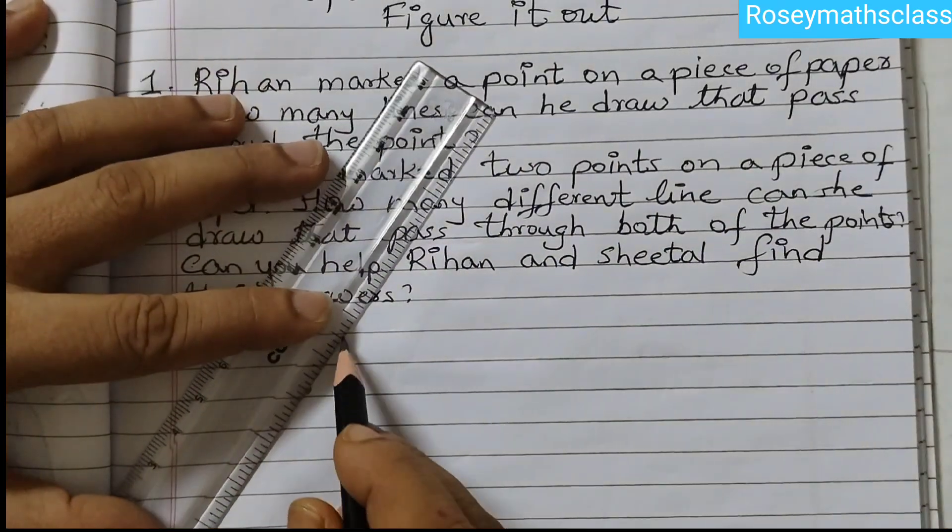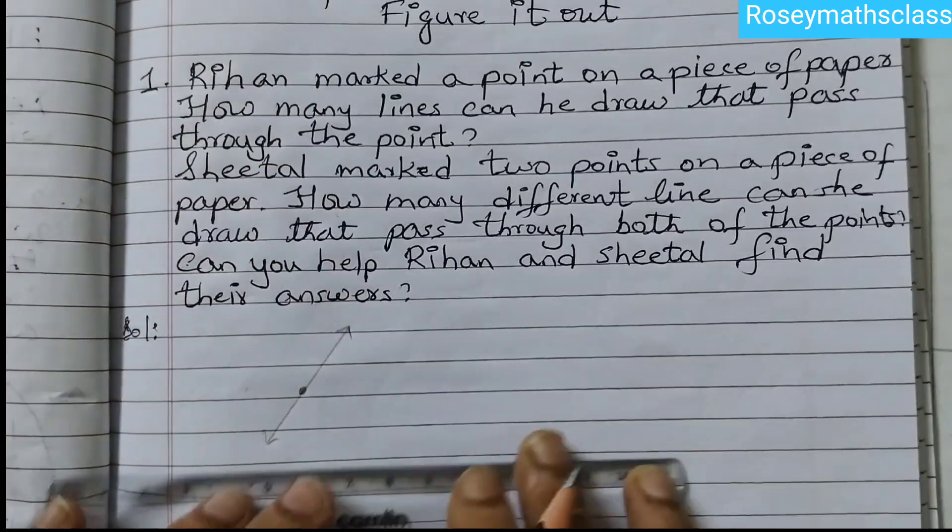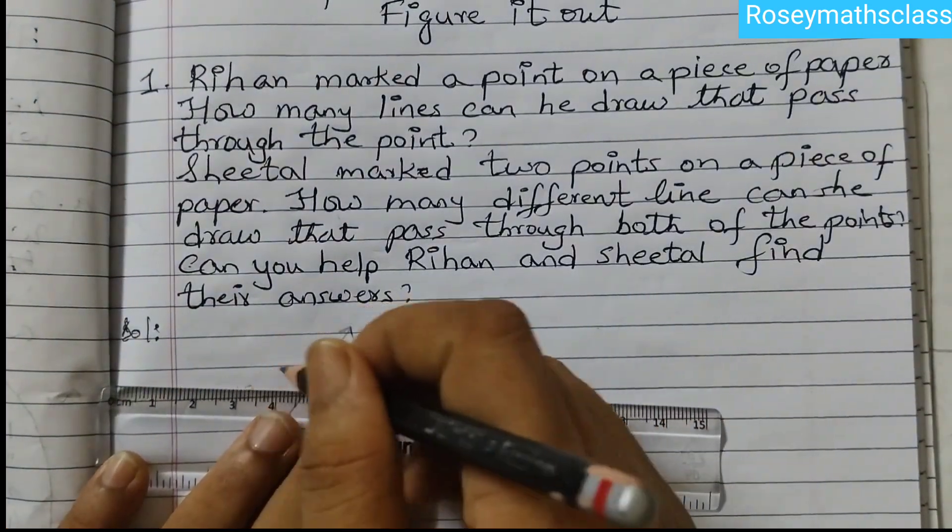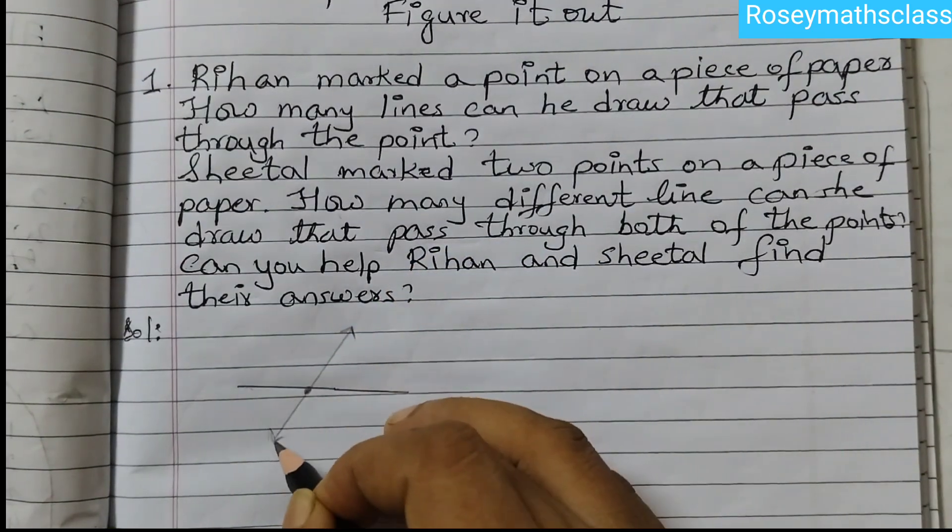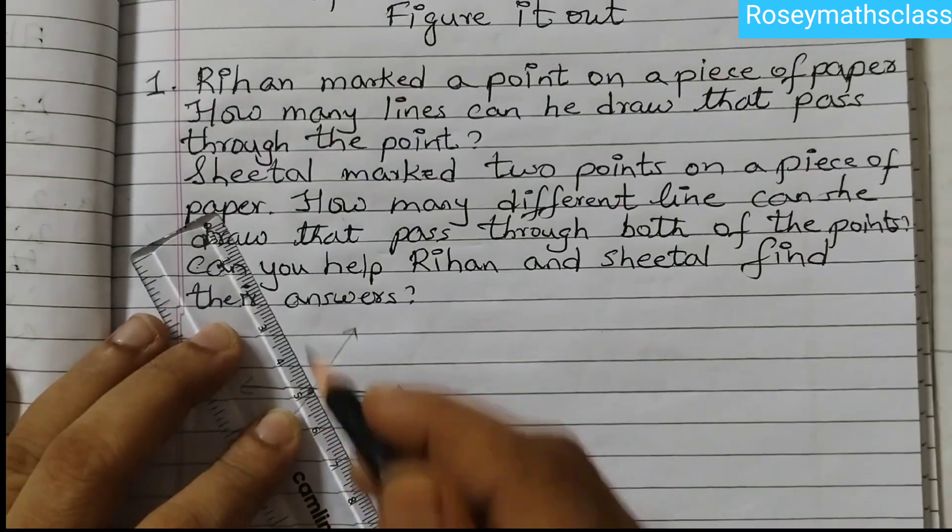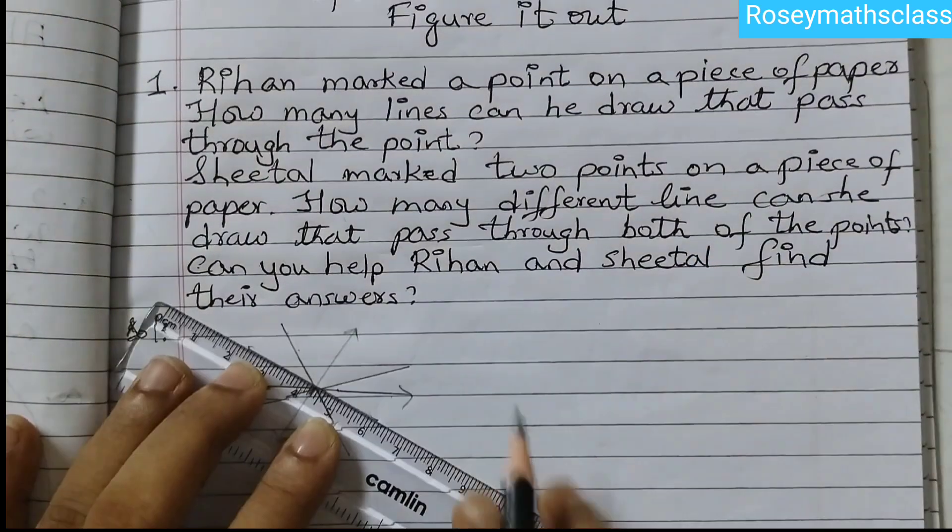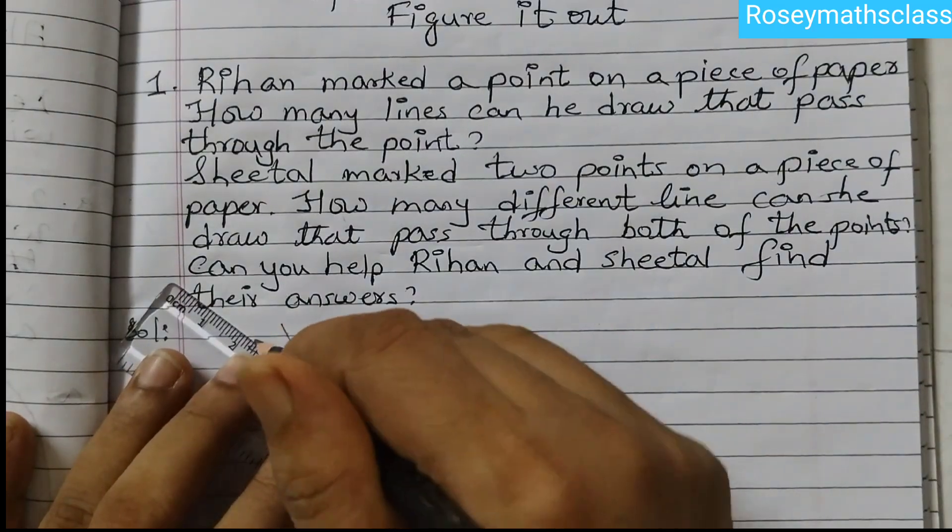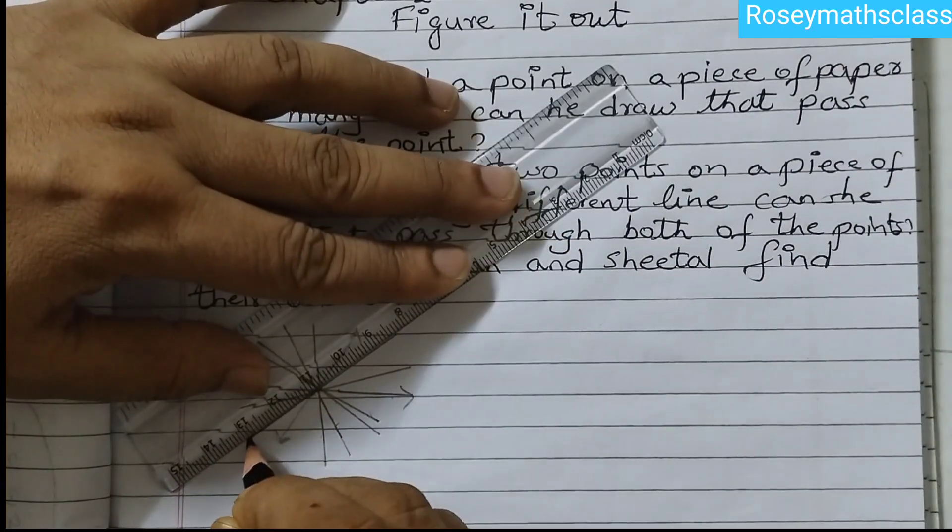If you see we can draw many lines. There is no count to this. This is one line. We can draw like this and for all the lines you need to put two arrowheads because that's how we show the lines. We can do it like this. We can do it like this. We cannot just count how many lines but many lines. Draw as many lines as you want.